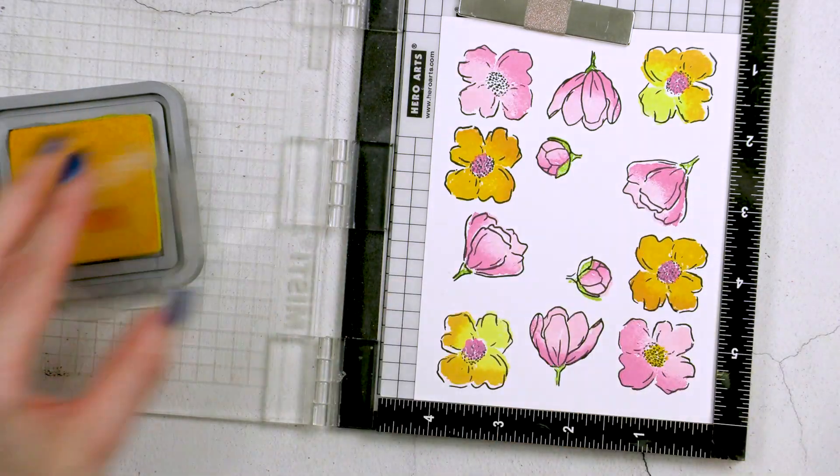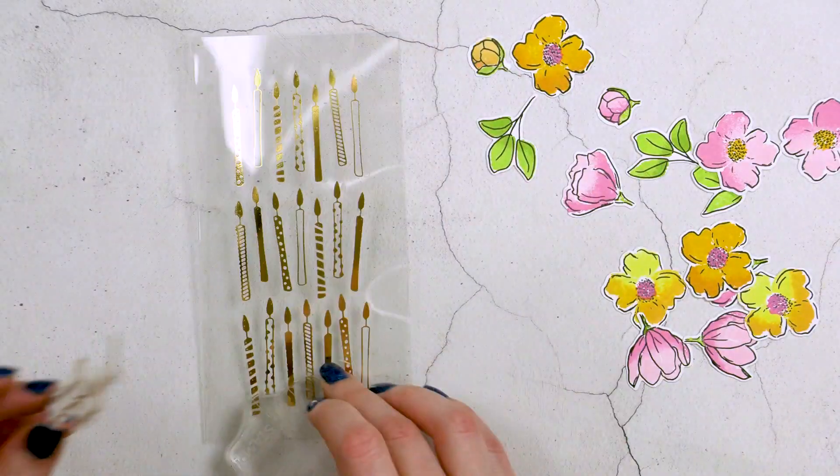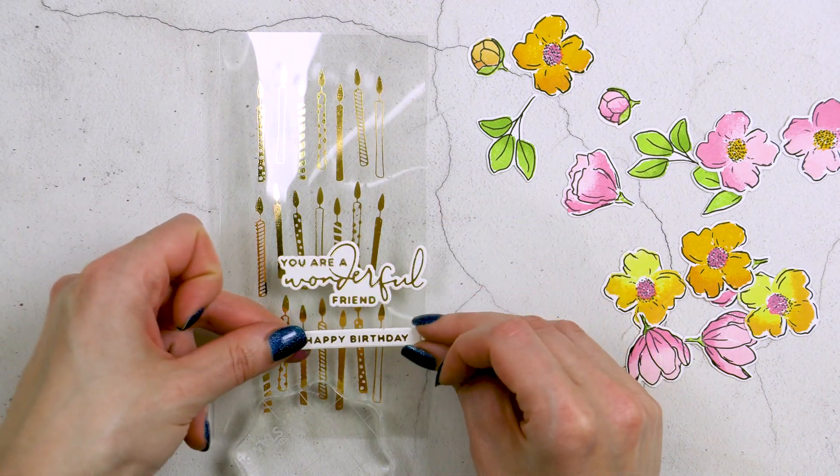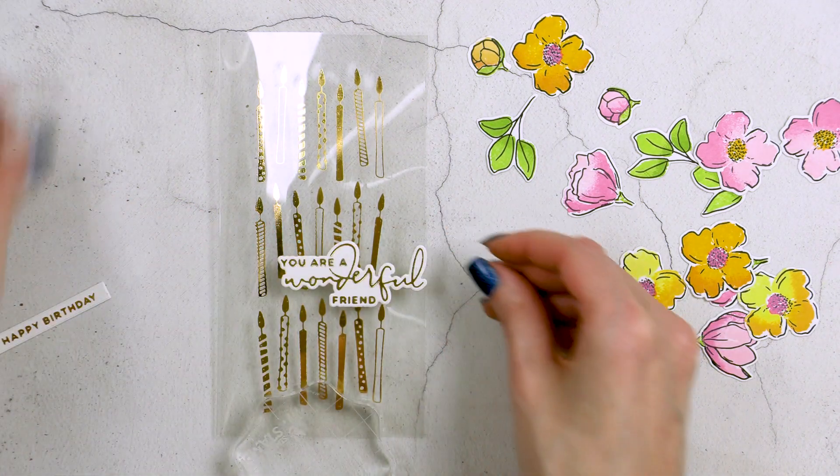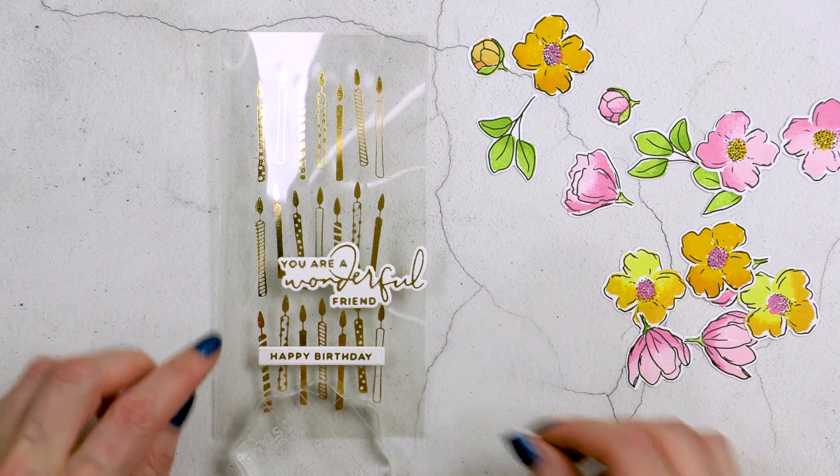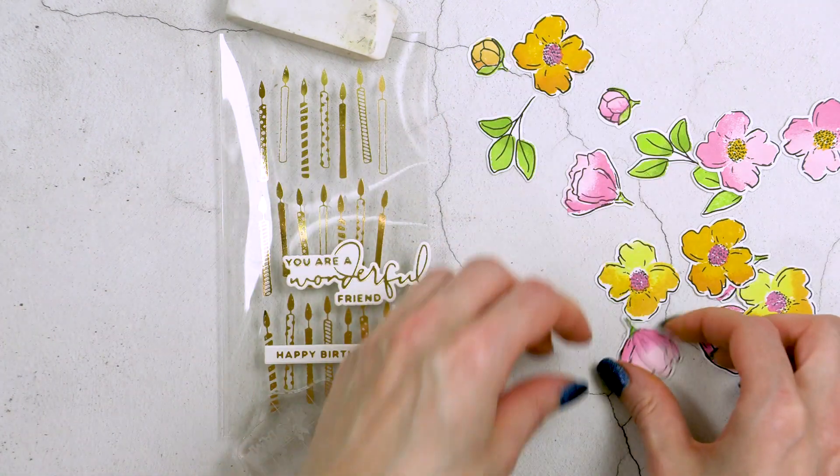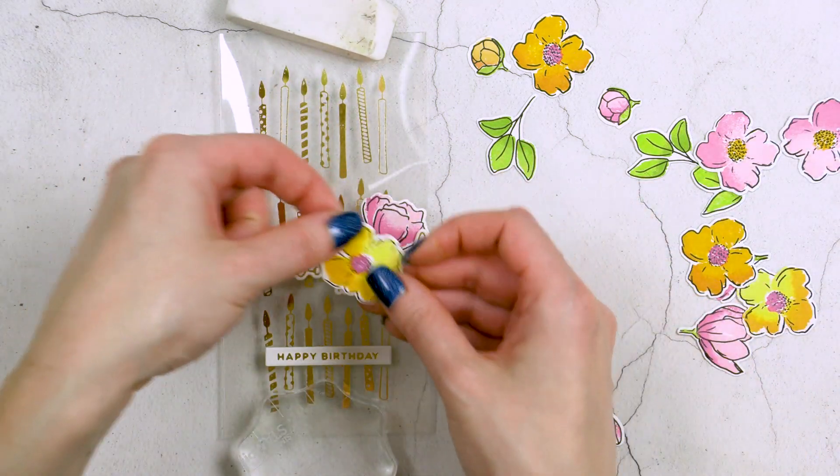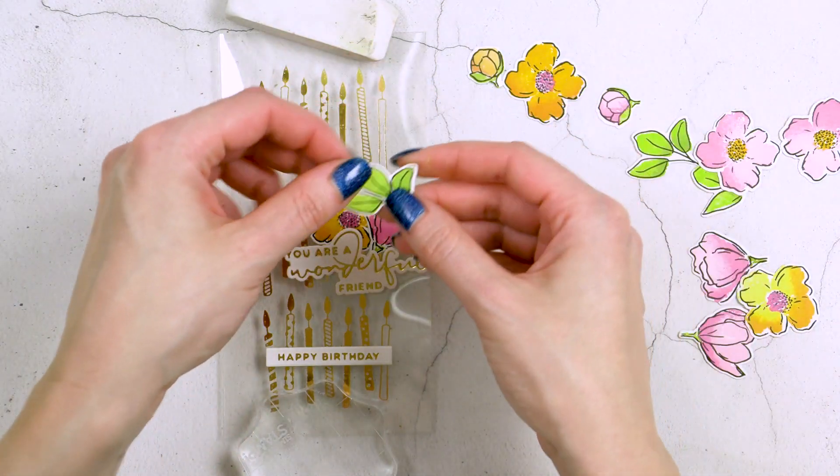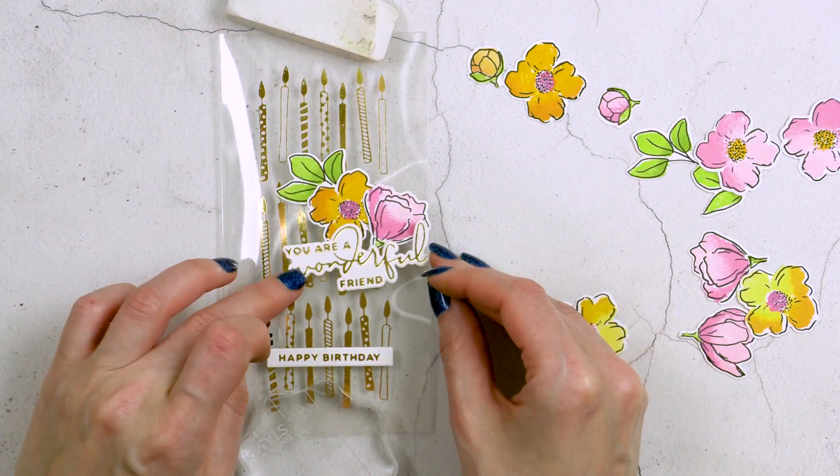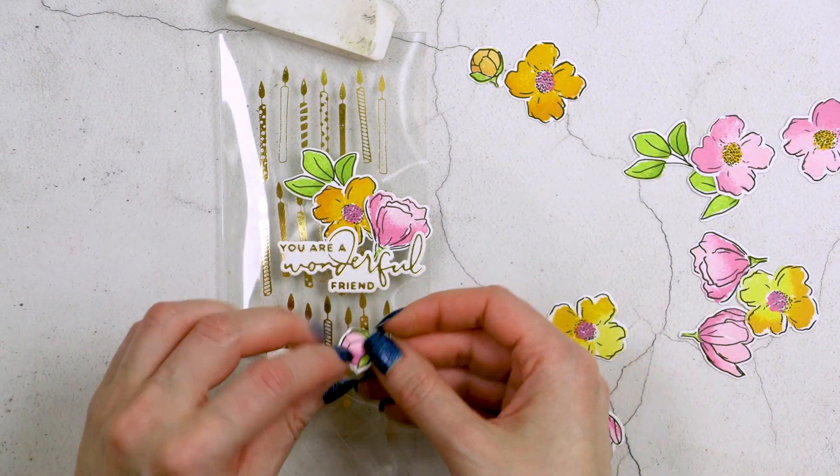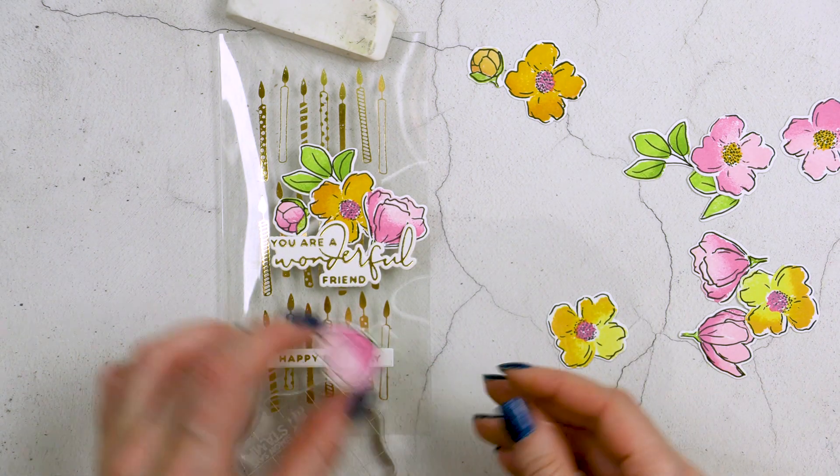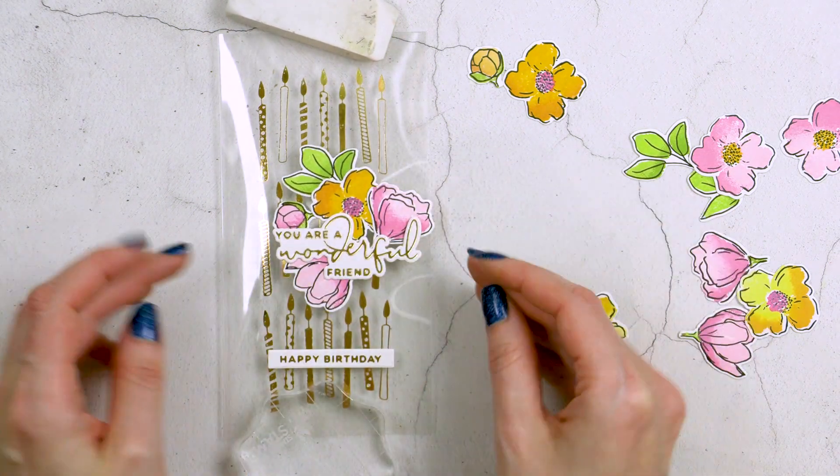I wanted to add the sentiment slightly off to the right hand side so here I have my you are a wonderful friend sentiment. I'm going to place it slightly towards the right hand side of the card and then I'm going to add happy birthday and I'll try to center it across the bottom row of the candles. Now I'm using a clear block and then my pencil eraser at the top there to basically hold my card base in place. The clear acetate tends to pop open all the time so I didn't want to use any adhesive to adhere the card shot so I just placed a clear acetate and then that pencil eraser at the top there and at the bottom to help the card base stay closed while I'm working on my floral arrangement.